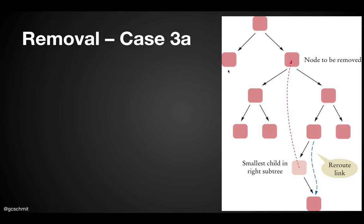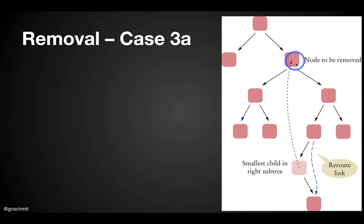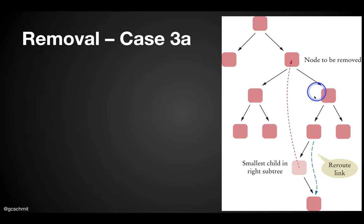We covered the case where the node has no children and the case where the node has one child, but what if the node to be removed — let's say it's this node here — has two children? Now we're kind of stuck because if we get rid of this node, we could use either child to replace it, but then what do we do with the other child? It's kind of a mess.